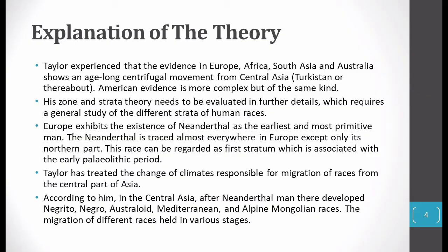Europe exhibits the existence of Neanderthal as the earliest and most primitive man. The Neanderthal is the most primitive and oldest man, found in Europe — except the northern part. This race can be regarded as the first stratum — it is the oldest, it means it is the first stratum, and it is associated with the early Paleolithic period.